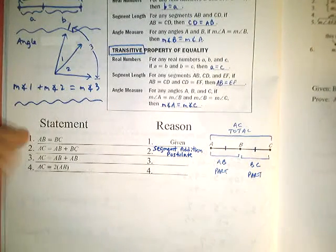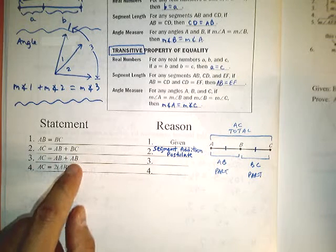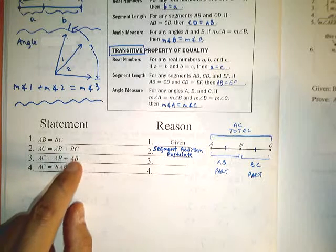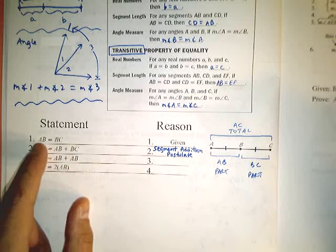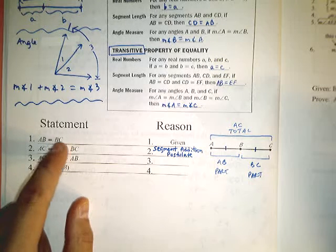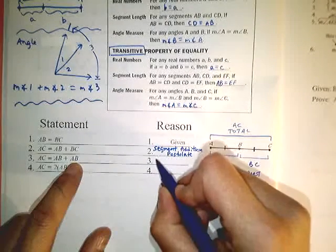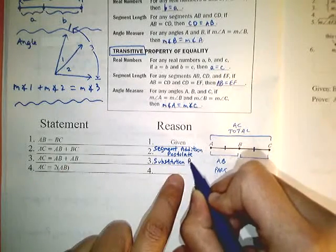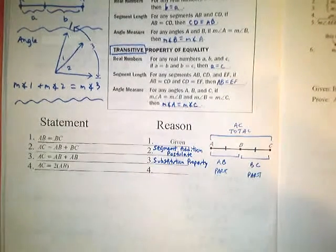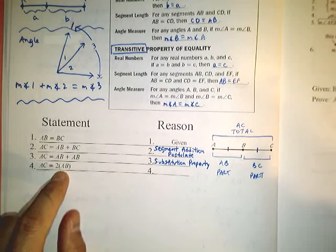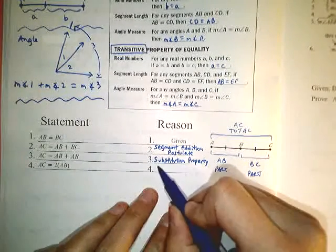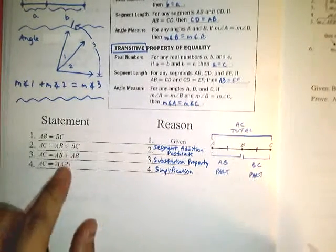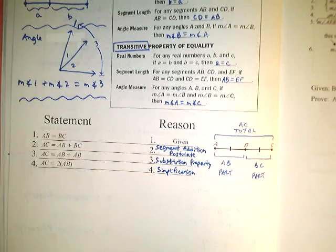Looking at statement 3, everything from statement 2 is the same except BC is replaced by AB. Why can we do that? Because we were given that AB equals BC — when two things are equal, you can take one out and put the other in. That is the substitution property. Then finally, AB plus AB simplifies to 2AB, so that step is justified by simplification — we added the like terms.